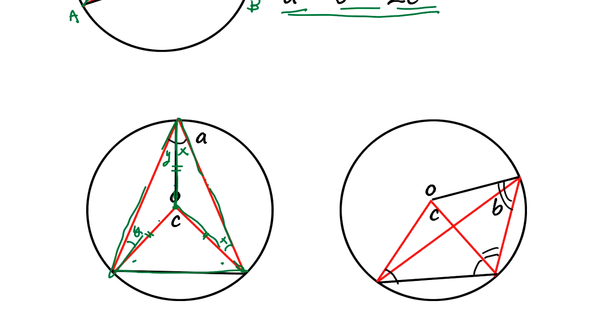So this angle is going to be C equals 2X plus 2Y. So X plus Y equals half of C. X plus Y is A. So A is X plus Y equals half C.